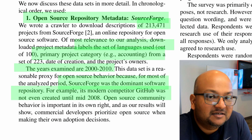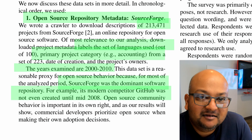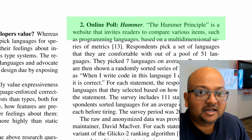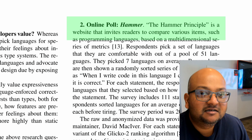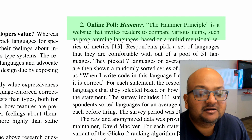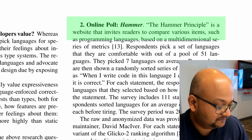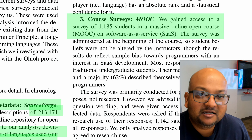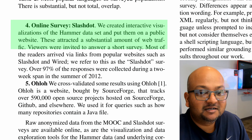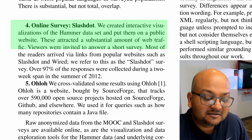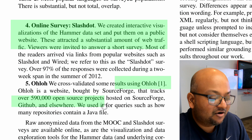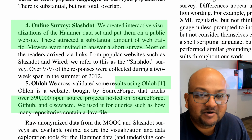At the time, SourceForge was the most popular repository for open source software — GitHub had not even appeared on the scene until 2008. Another data set was an online poll in which programmers were asked to rate their agreement or disagreement with a number of statements. They also surveyed about 1,100 students in an online course on Software as a Service, performed a survey on Slashdot readers, and finally used Ohloh, which tracks open source projects across a number of repositories.